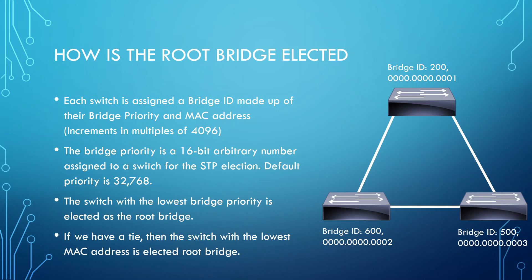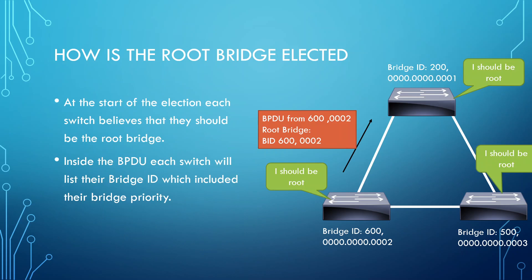The way the election process works: all switches at the beginning believe they should be the root bridge. They don't know anything else about the STP topology yet. They haven't received any other BPDUs, so they each assume they should be the root bridge.